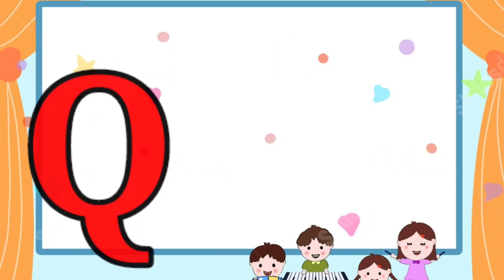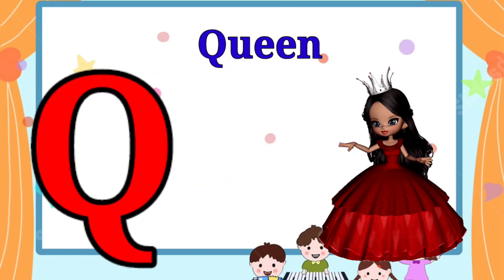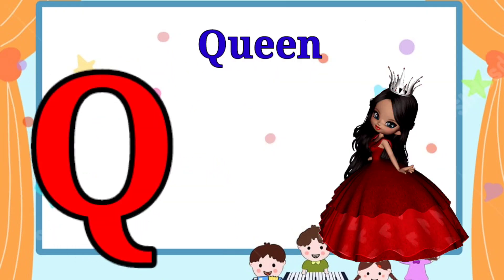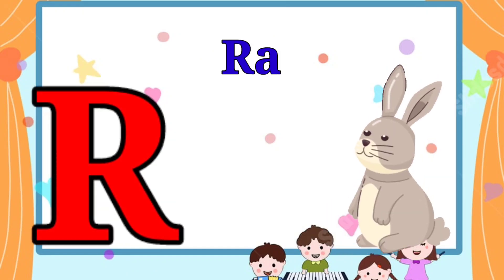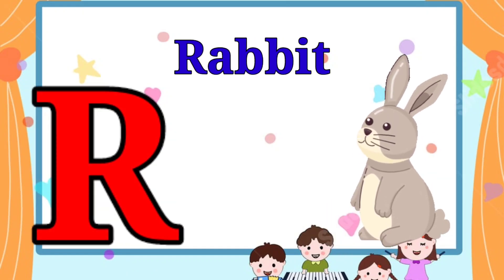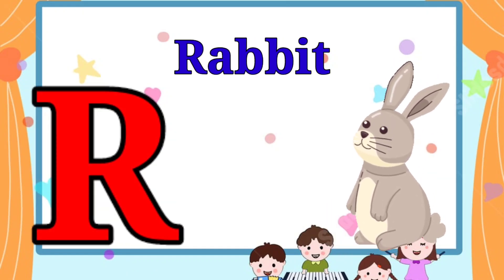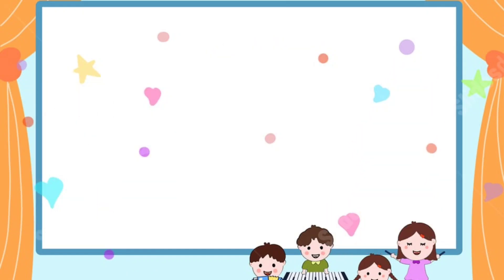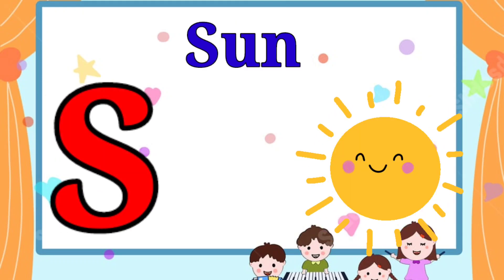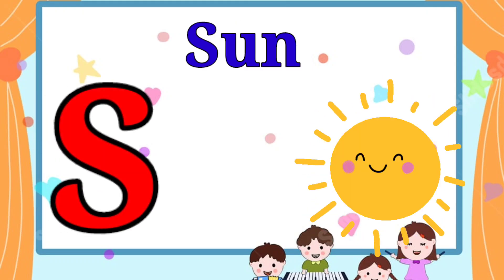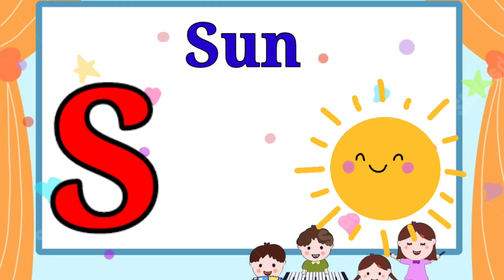Q is for queen, kw-kw-queen. R is for rabbit, r-r-rabbit. S is for sun, s-s-sun.